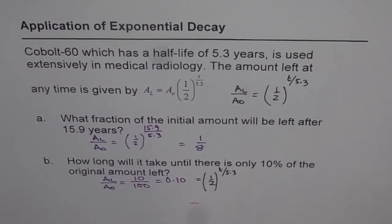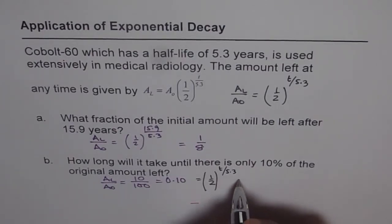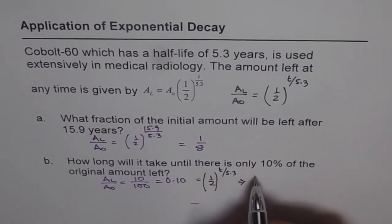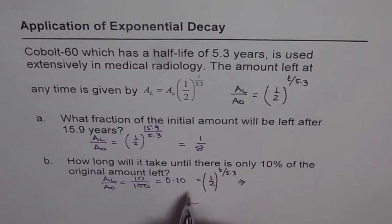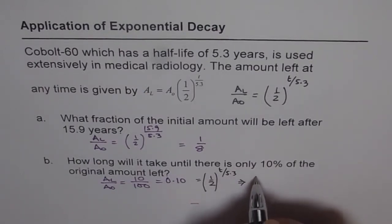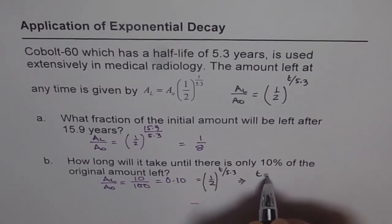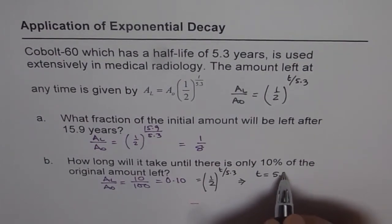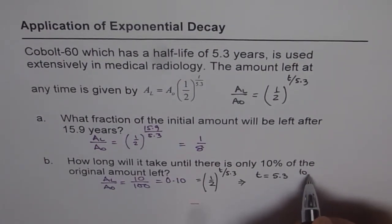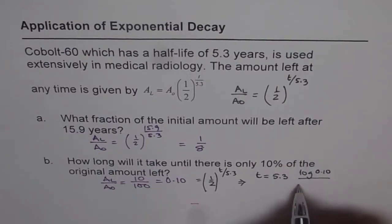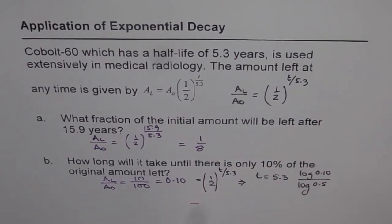To solve this, we can take log both sides. This gives us T = 5.3 × log(0.10) / log(0.5). That is how we can find time from here.